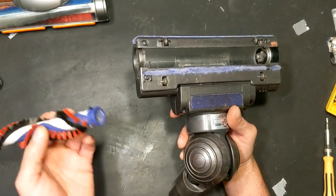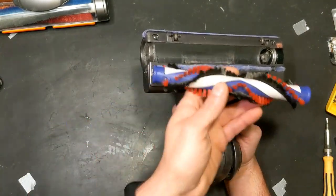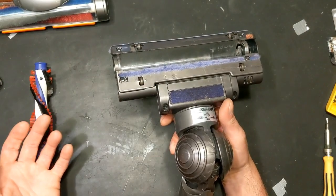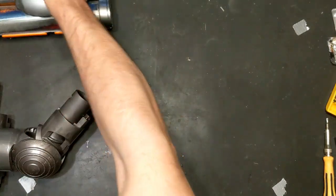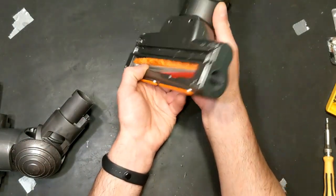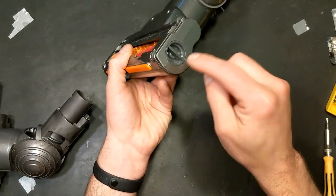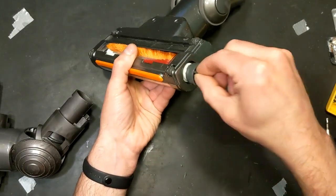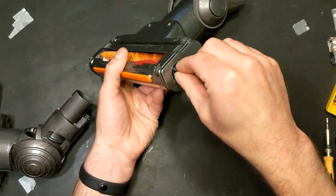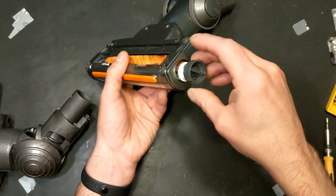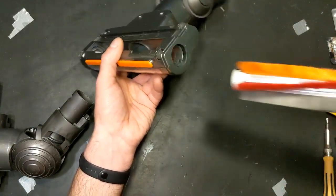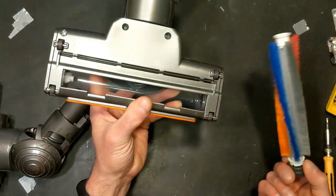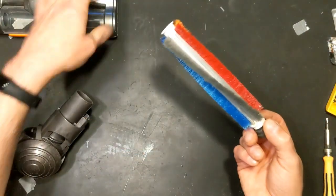So you would take that out and that's pretty much the only user serviceable part on this, is to remove the brush roll and clean it. So for the Chinese copy, they make it a little bit easier. It just has a little cap that's actually captive with the brush roll, and again it pulls right out the side.